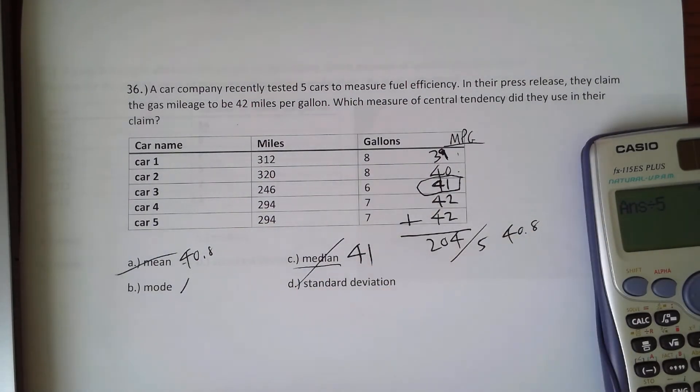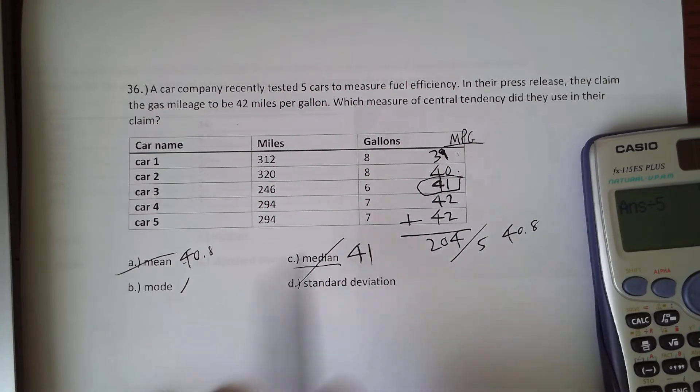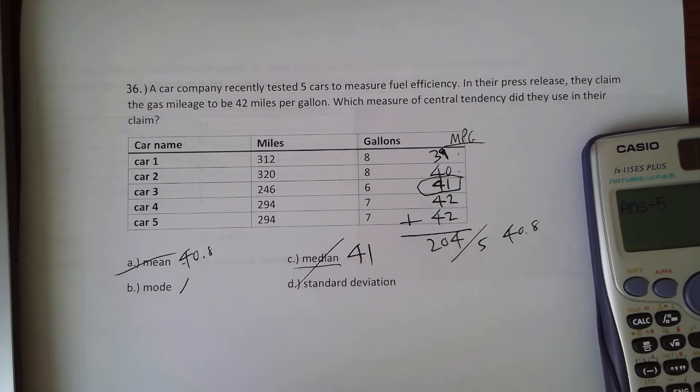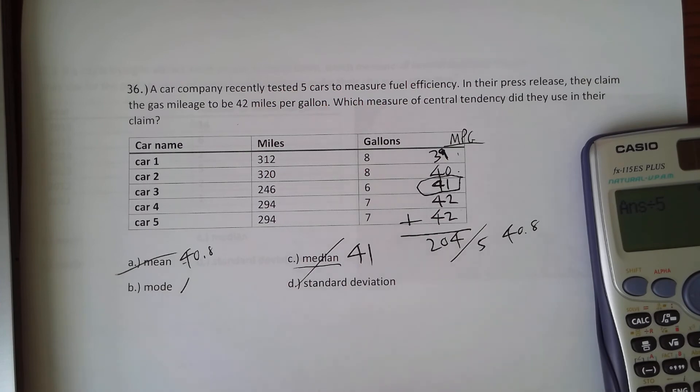Had there been an even number, you would take the two in the middle, add them together, and divide by two, which is just finding the average of the two.